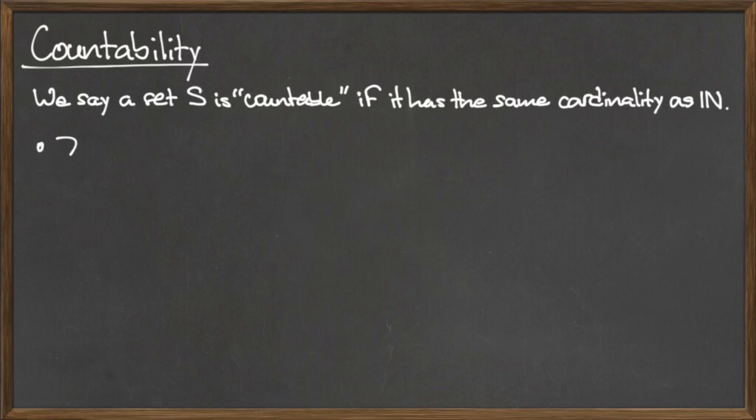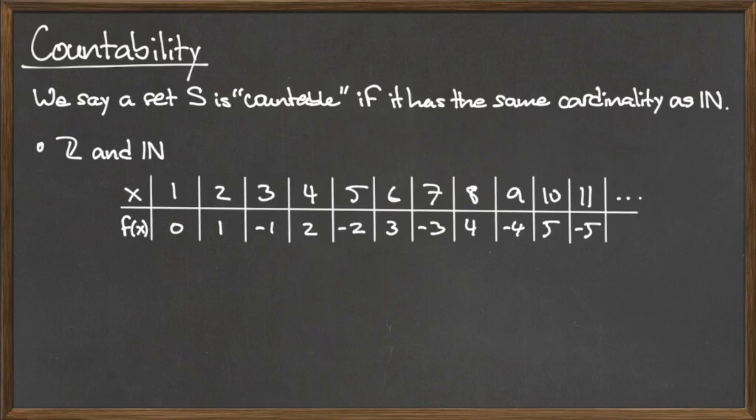For example, even though the integers are an infinite set and therefore have infinite cardinality, the integers are countable since there does exist an invertible function between the integers and the natural numbers, as illustrated by the diagram below.